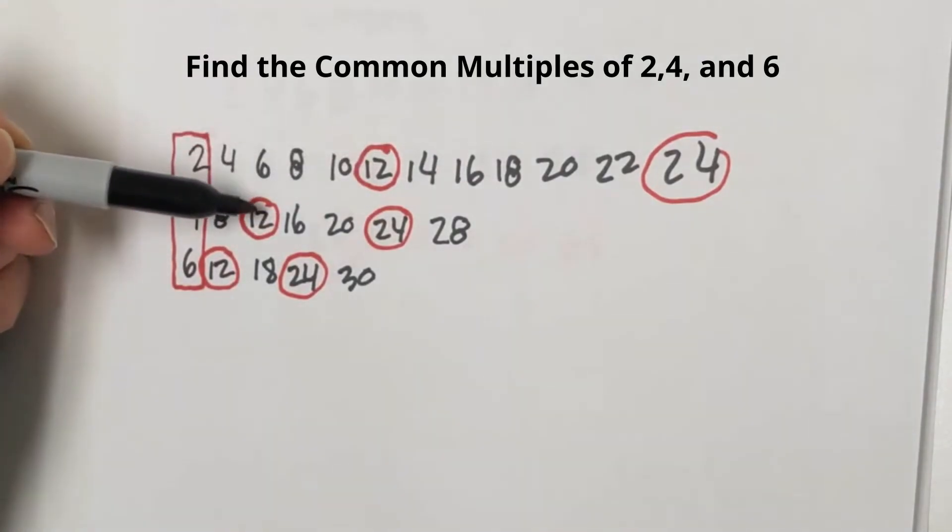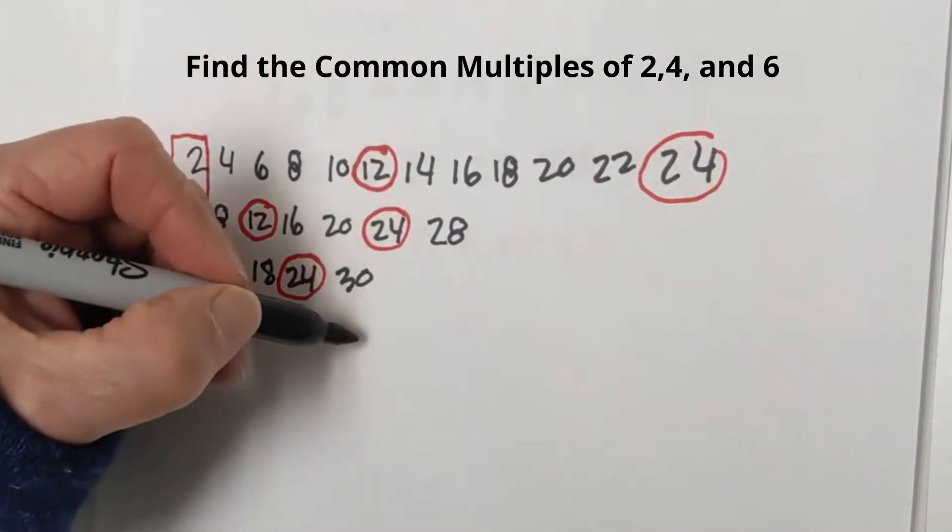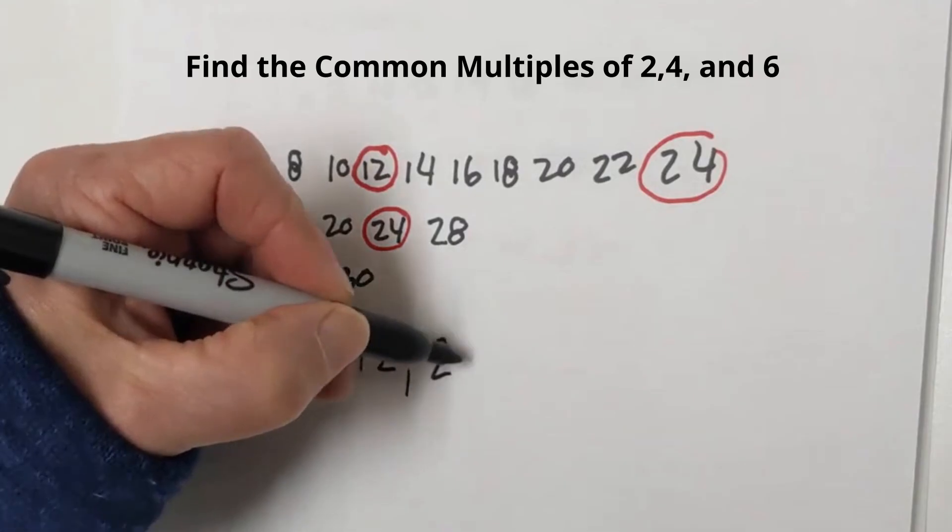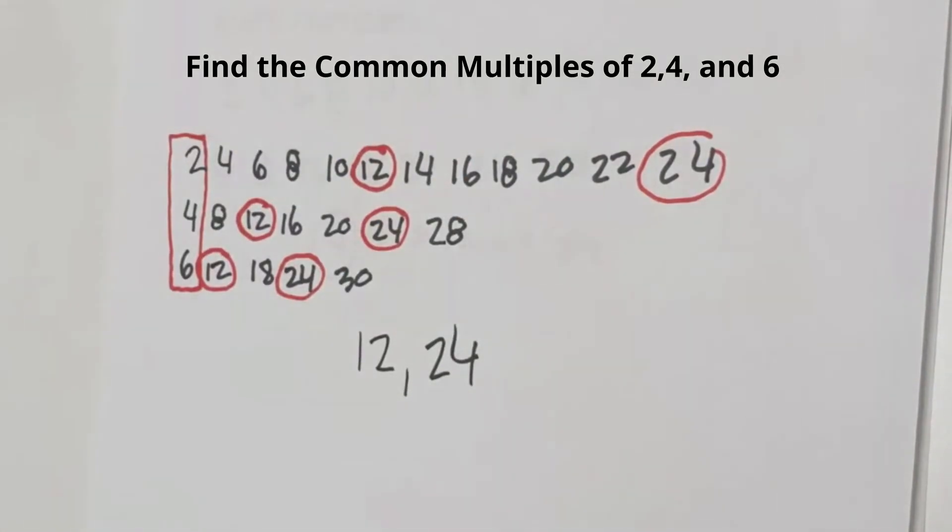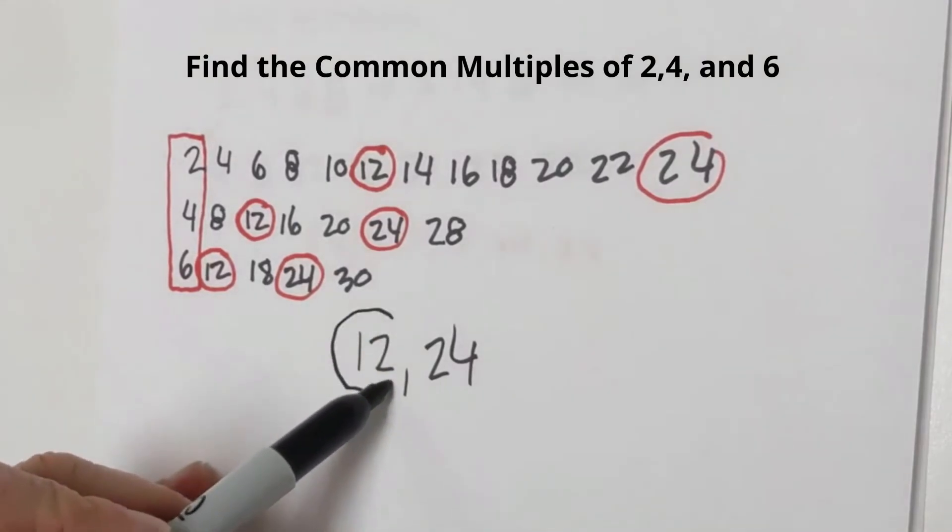And remember, this could go on longer. I have circled the common multiples of these three. We have a 12, a 12, and a 12; 24, 24, 24. So it would be 12 and 24 for the places that we have here. And then if you needed the least common, it would be this 12.